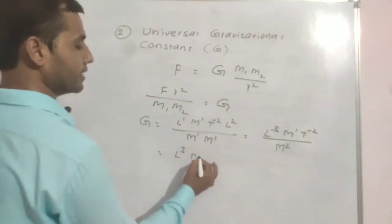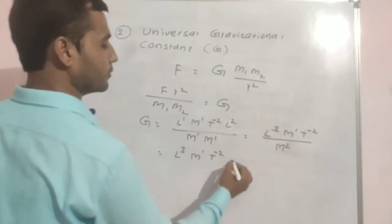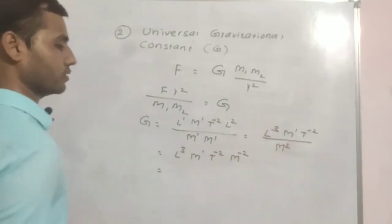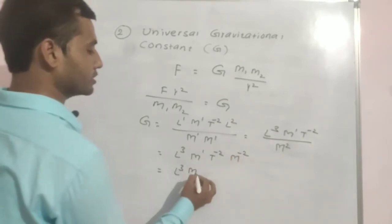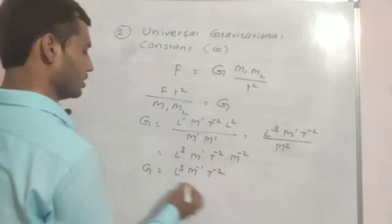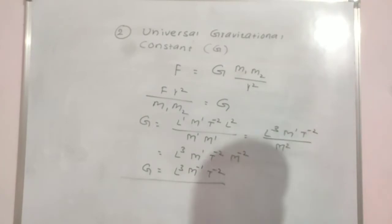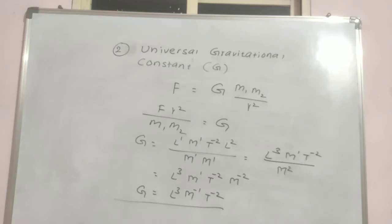So now you can write here, this becomes l3, this is m1, this is t minus 2, and m1 m1 becomes m2. So from this I will write l3 m1 t minus 2, this m2 going up becomes minus 2. So I will write l3, this plus 1 minus 2 is m minus 1, and this is t minus 2. So that is capital G, the universal gravitational constant.